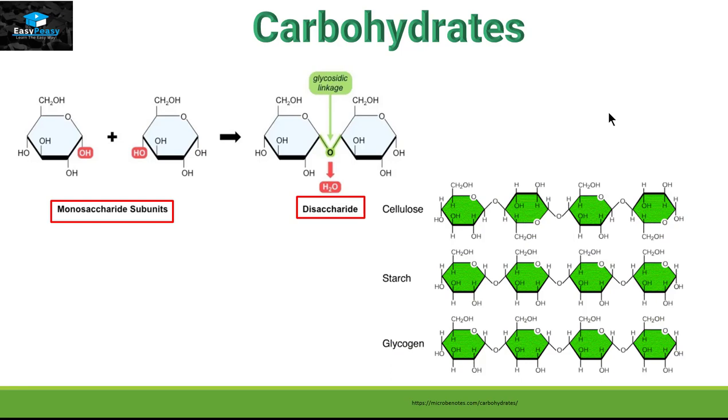Now look closely at the structure of carbohydrates. We can find out the elements that are making these carbohydrates, and that includes hydrogen, carbon, and oxygen. So carbohydrates are only made up of these three elements.